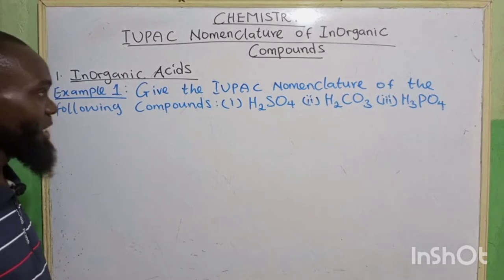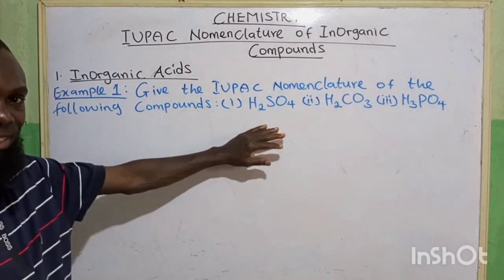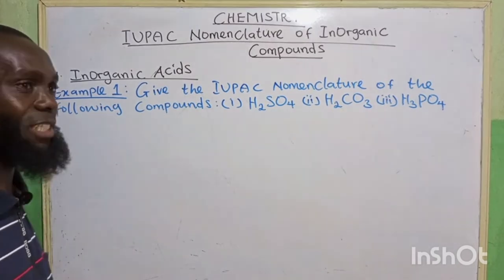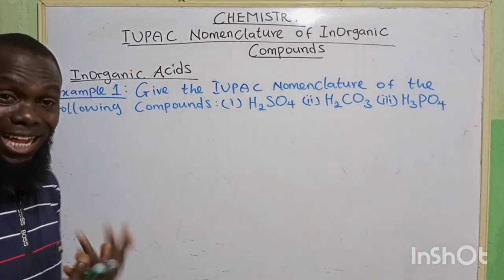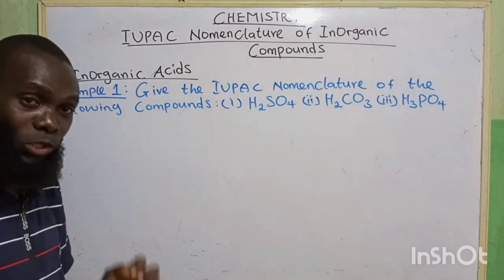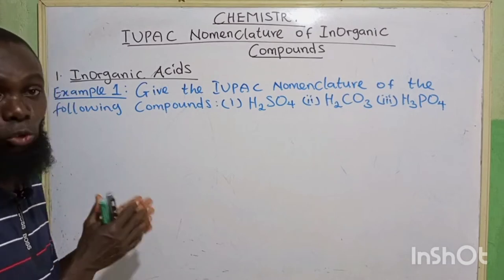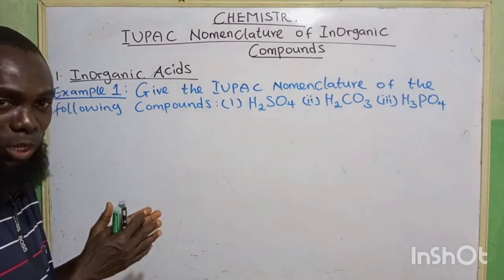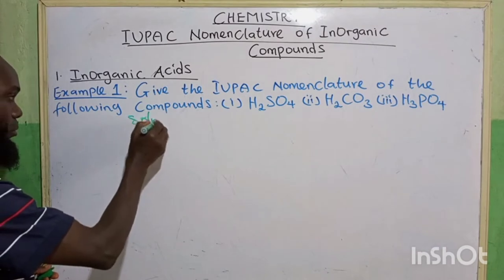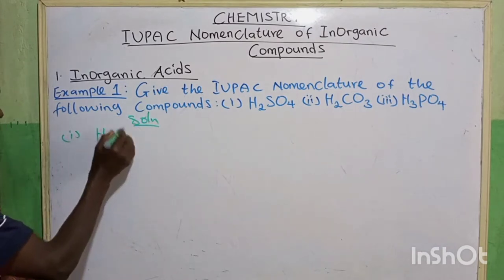Example 1: give the IUPAC nomenclature of the following compounds. So these are the acids — I want to look at their names. Now, don't forget, we are already looking at finding oxidation number using our valency. The same way we solved that is the same way I'm going to solve this as well. The first one, we have H₂SO₄.